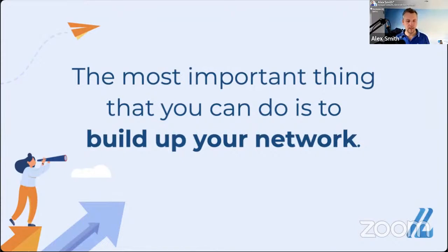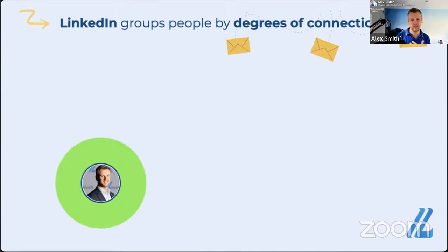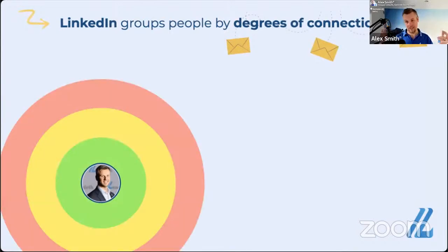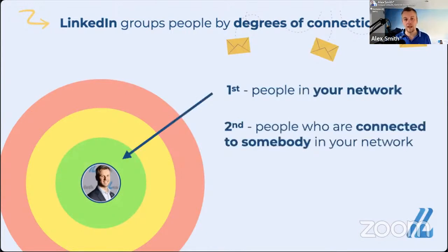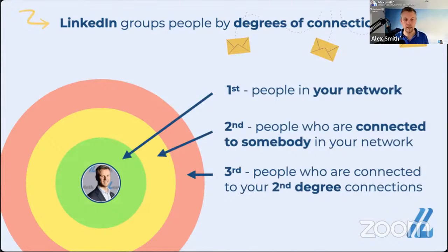Let me explain the degrees of connections. The green circle is your first degree network — people already connected to you; you can freely talk to them. The yellow circle is your second degree connection — people connected to you via your first degree. The red circle is your third degree — connected to your second degree connections. Ultimately, everyone is either one or two degrees away, so you're never too far from connecting to anybody on LinkedIn.